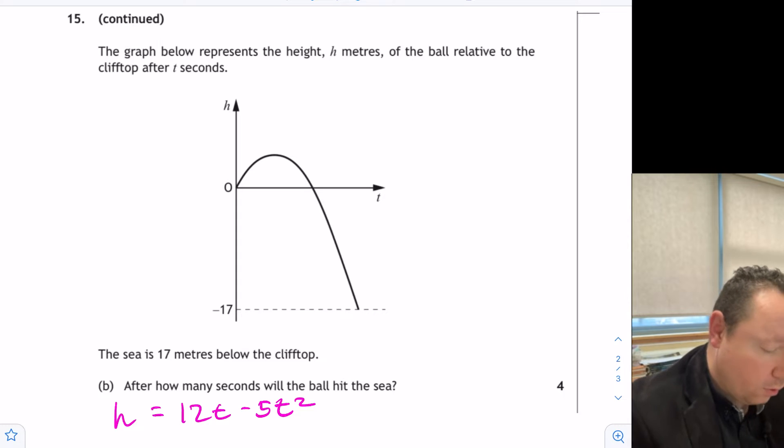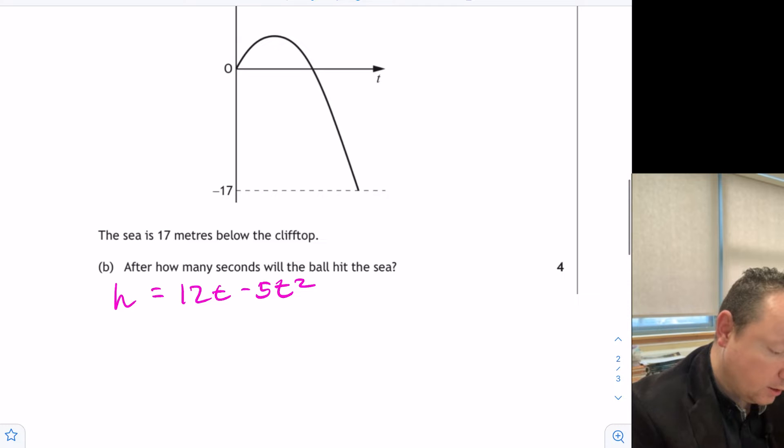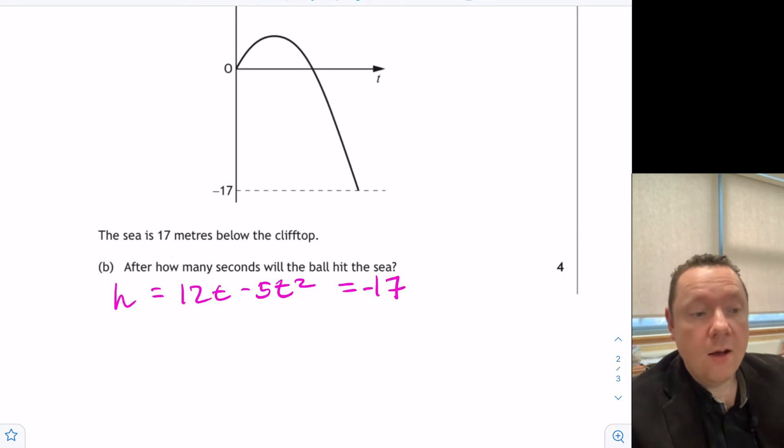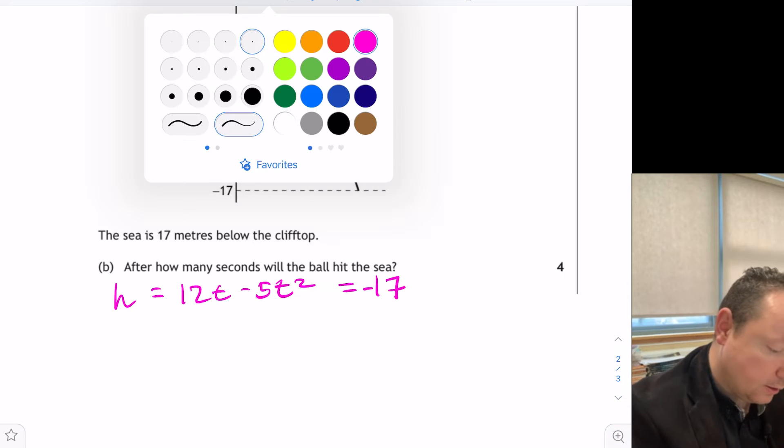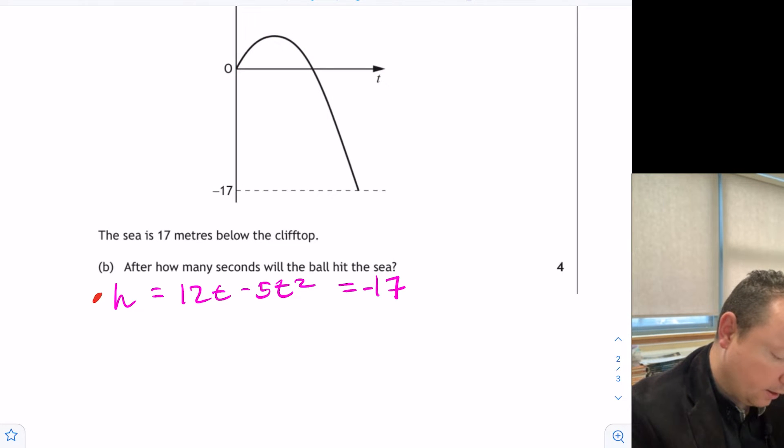But we know that this must equal -17 because it's gone down by 17 from the start. So that means we just need to say that equals -17 for one mark. And that's difficult to see if you're not sure of the context of the question.